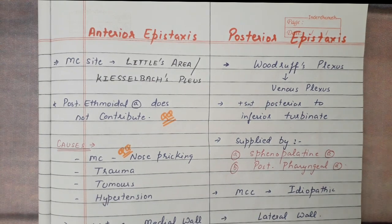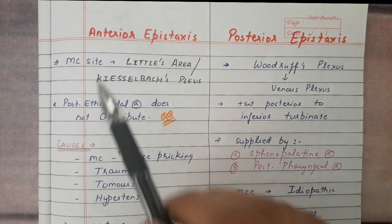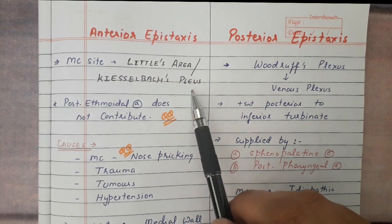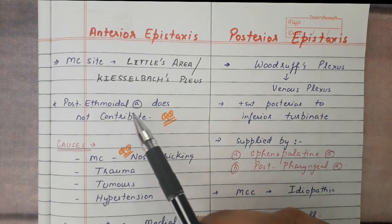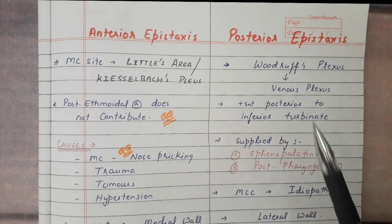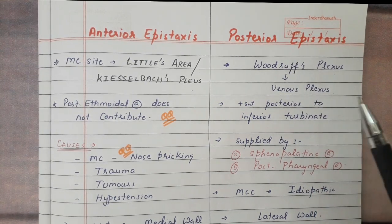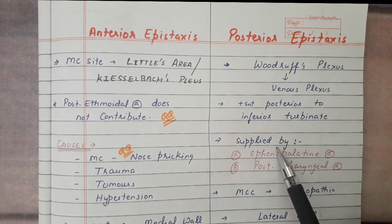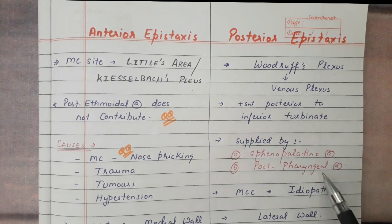Depending on the location of bleeding, epistaxis is divided into anterior and posterior. The most common site for anterior epistaxis is Little's area or Kiesselbach's plexus. For posterior epistaxis, Woodruff's plexus is the most common site — it is a venous plexus located posterior to the inferior turbinate. The blood supply to the posterior epistaxis region is from the sphenopalatine artery and posterior pharyngeal artery.